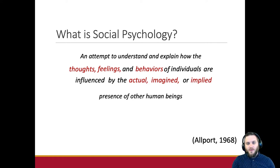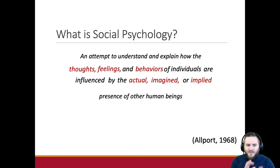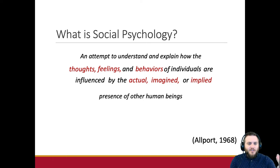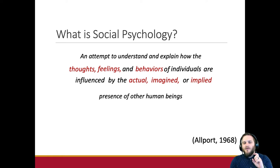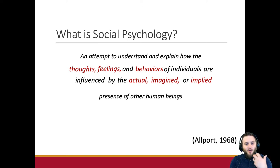What does the social environment have to do with it? What do we mean by actual, imagined, or implied? Actual social situations are what's actually happening — talking to your mom, your friend, your wife, a group of students. Imagined: remembering times when you think 'what should I say to that person?' Implied: how we think about the various implications of others' thoughts, feelings, and behaviors in a social interaction setting.